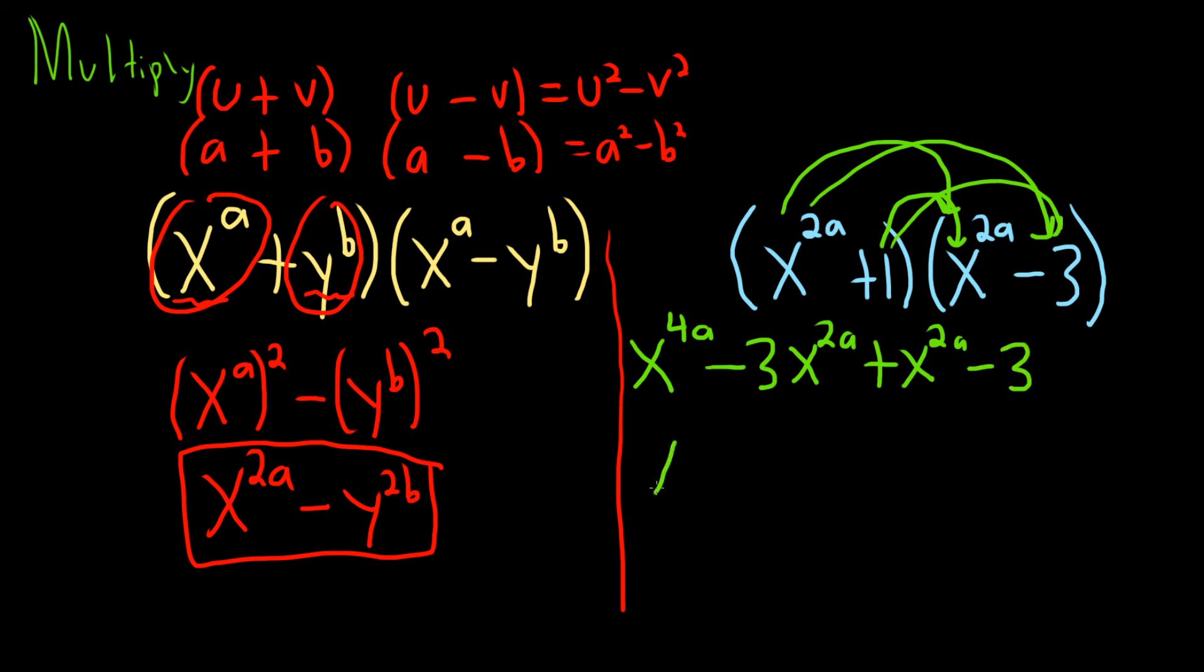So we end up with x to the 4a. Negative 3x to the 2a plus 1x to the 2a is minus 2x to the 2a. Minus 3. And there would be the final answer.